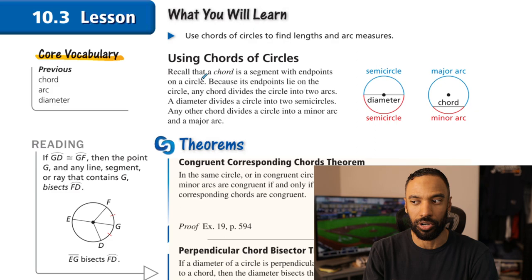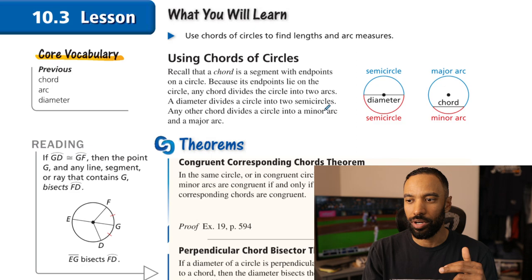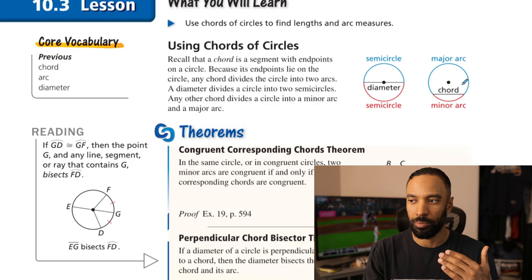Using chords of circles. Recall that a chord is a segment with endpoints on a circle — that includes the diameter. Because its endpoints lie in the circle, any chord divides the circle into two arcs. A diameter divides the circle into two semicircles. Any other chord divides the circle into a minor arc and a major arc. Minor arc is less than 180 degrees; major arc is more than 180 degrees.